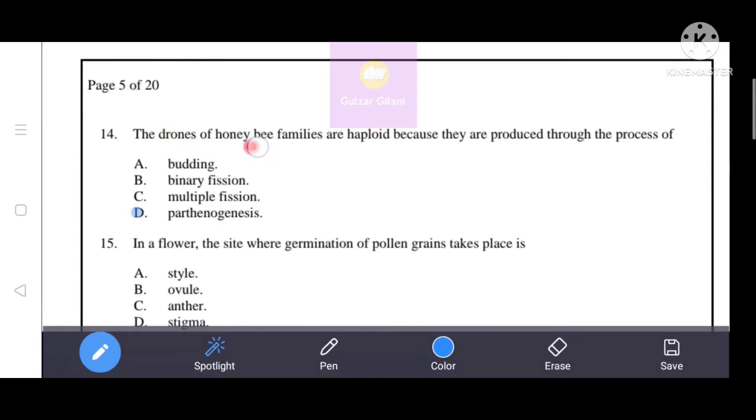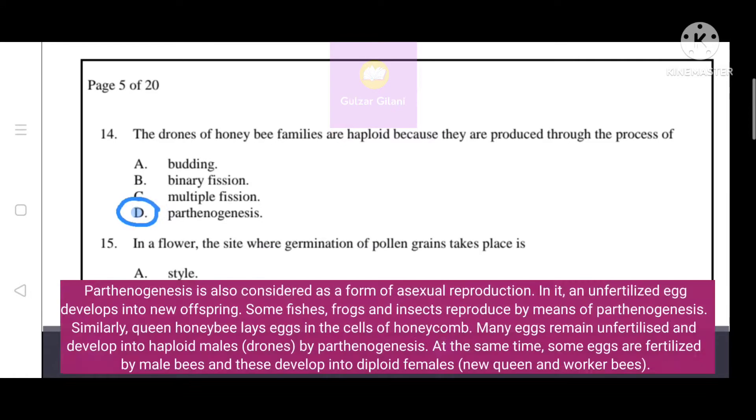The drones of honeybee families are haploid because they are produced through the process of - given options, the correct answer is option D, parthenogenesis.